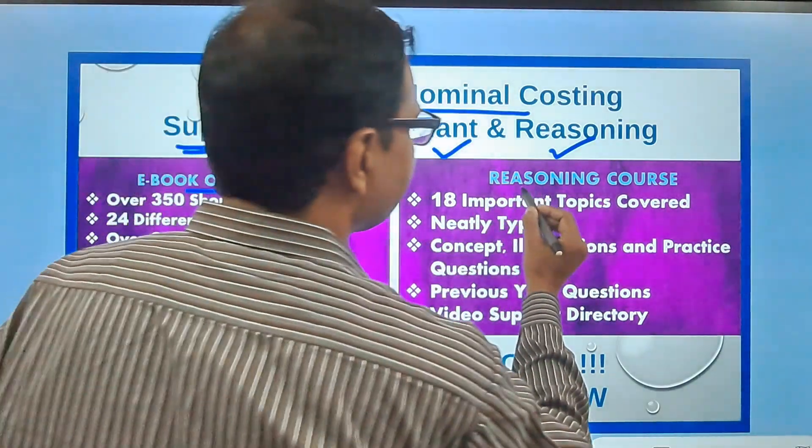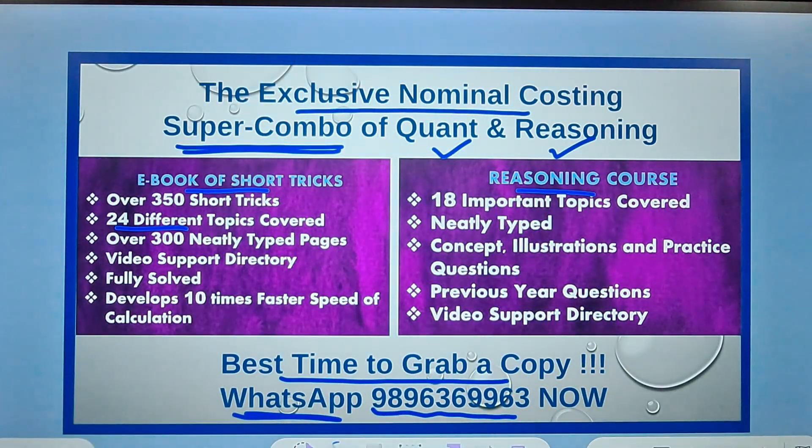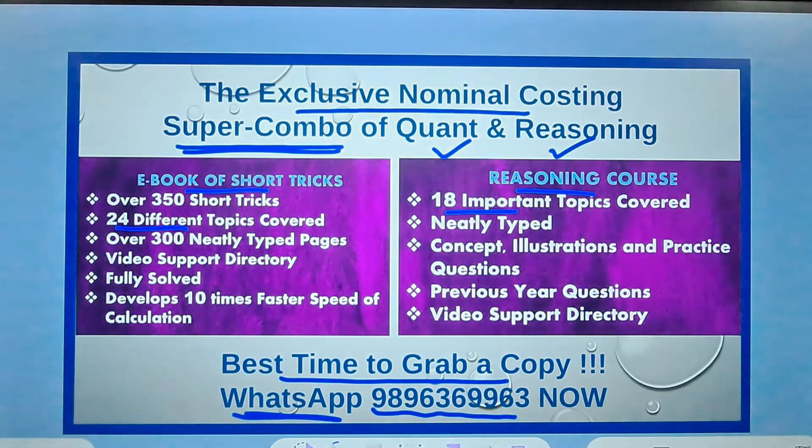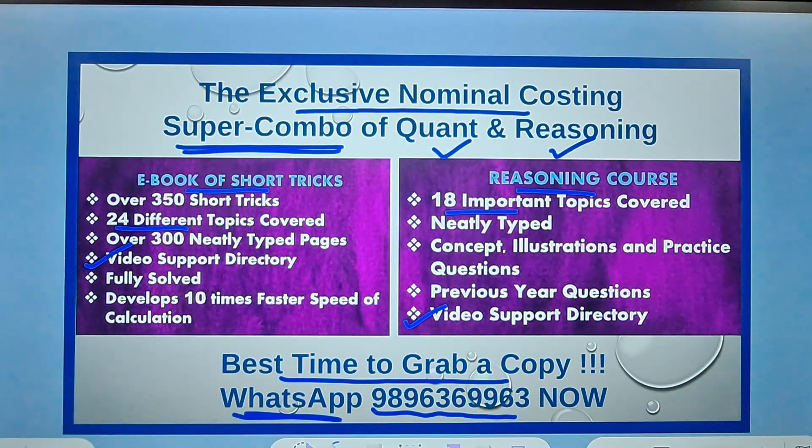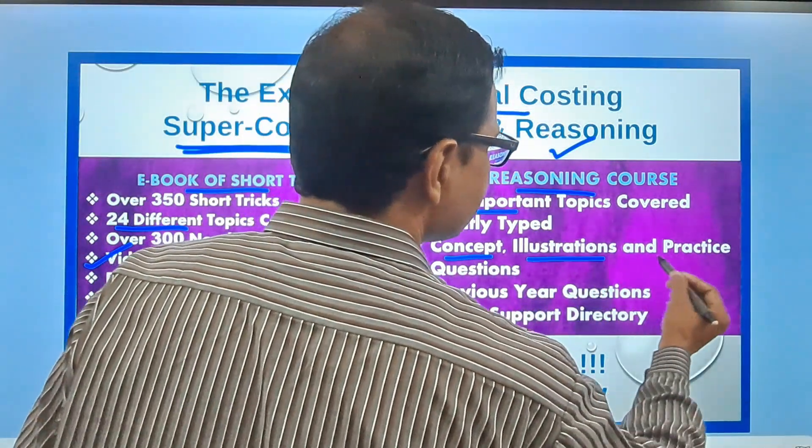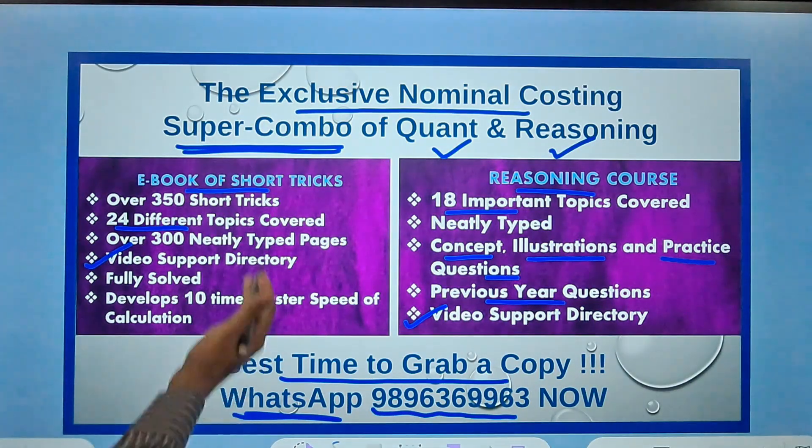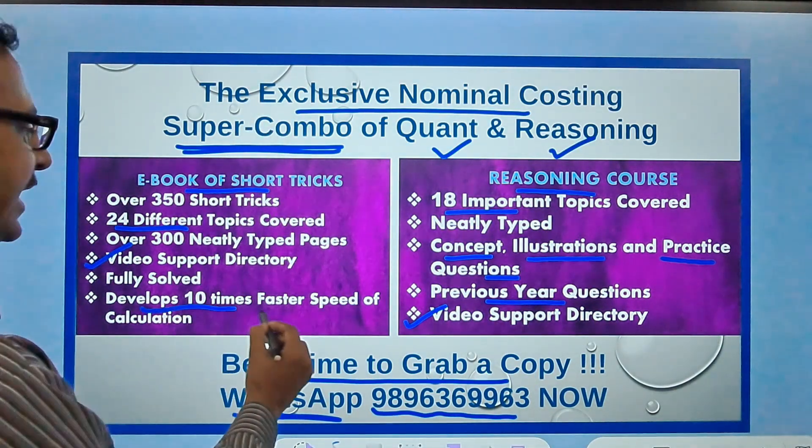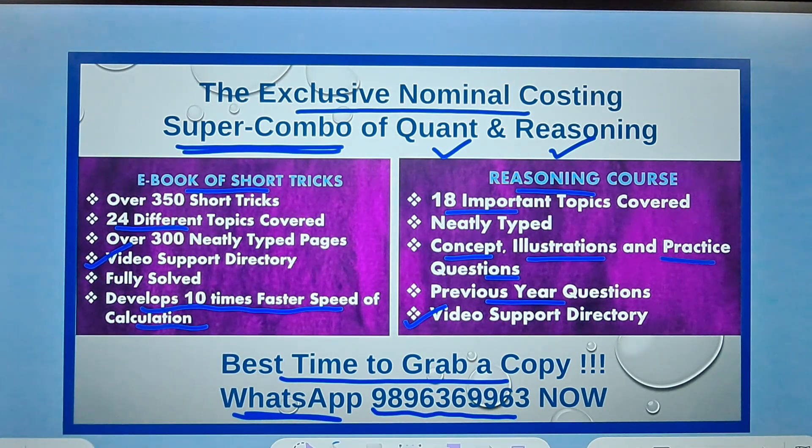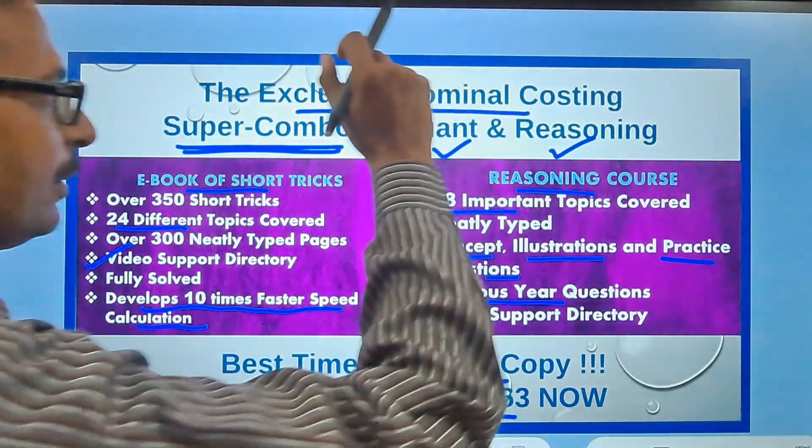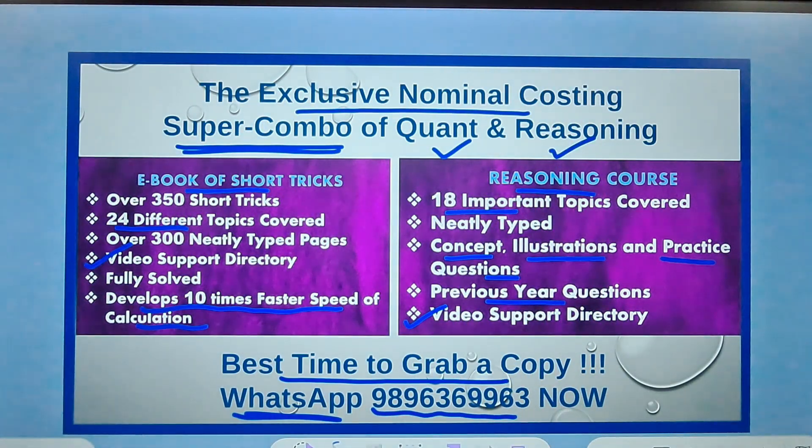The ebook of short tricks and the reasoning course - it contains 24 different chapters and this contains 18 important chapters. Both come with video support so that if you don't understand something you can just play the video and watch and clear your concepts. All the concepts are there, illustrations, practice questions, previous year questions, lots and lots of things. It helps you develop 10 times faster speed of calculations. If you are studying at school level or at college level or preparing for any kind of competitive exam, then this super combo of quant and reasoning is going to prove very beneficial for all of you. 9896369963, that's my WhatsApp number. Do send me a message if you want to grab a copy.